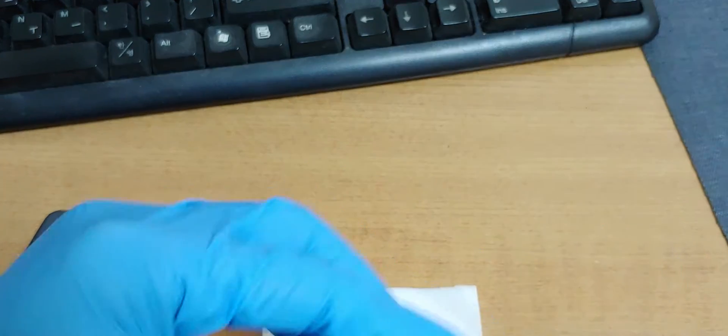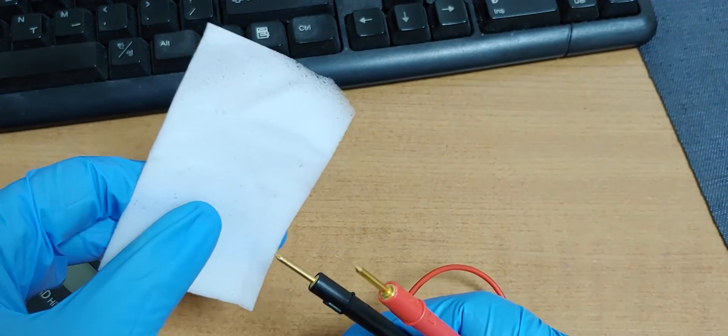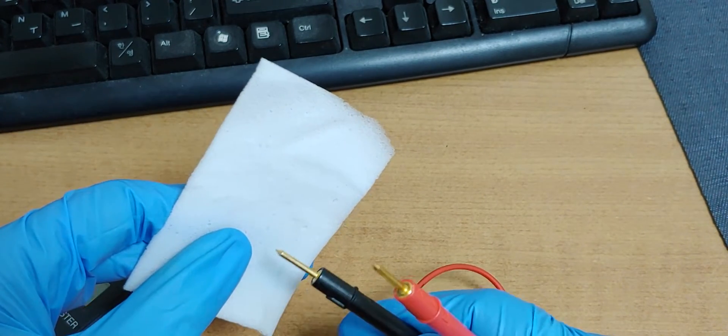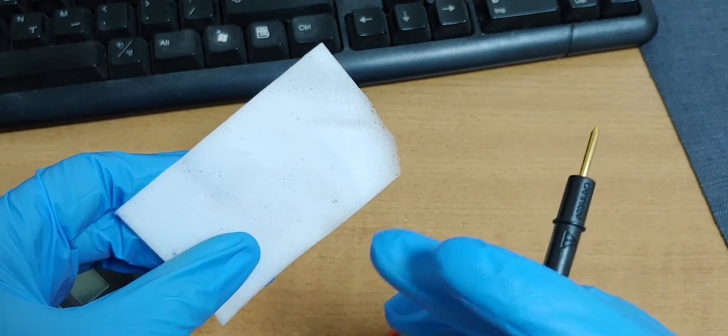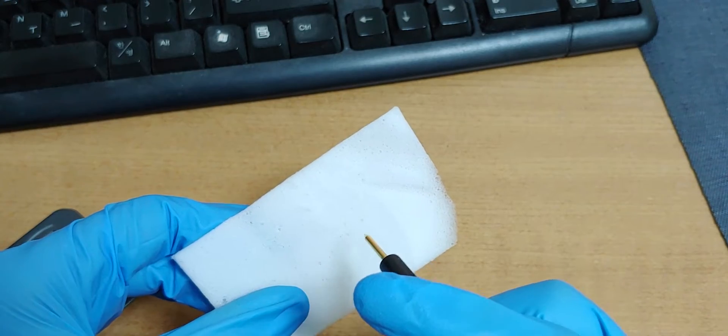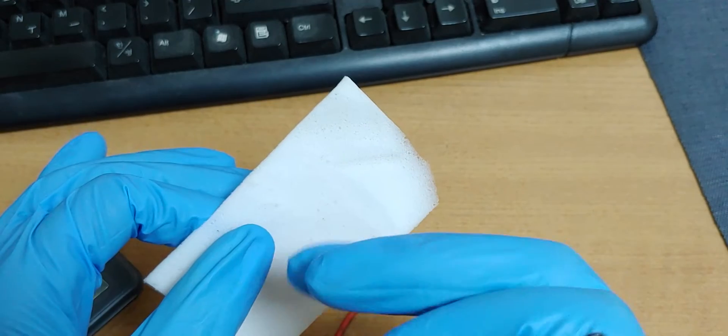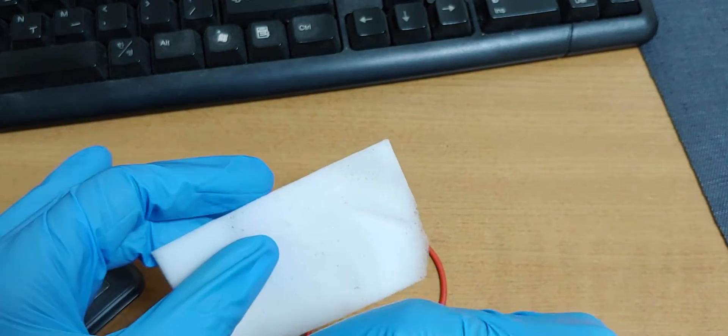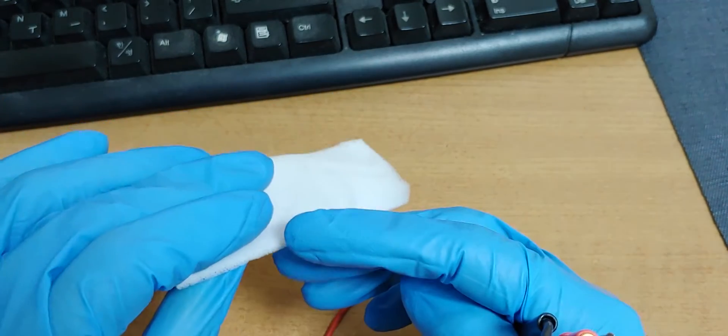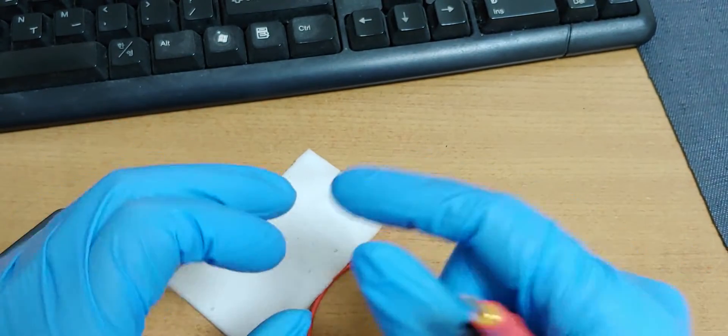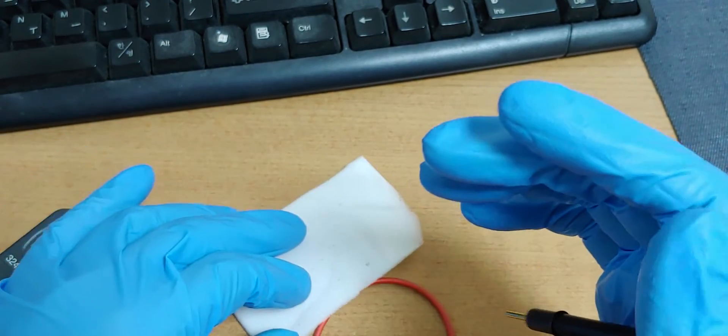I think if this becomes wet, it will be a good electrolyte. But maybe if it is wet, there will be one problem. Because this is white, maybe I think there is chloride here. I think it will make aluminum electrode corroded.